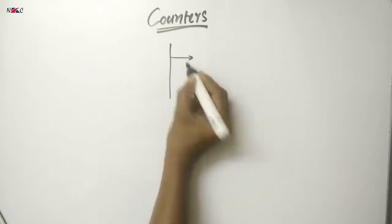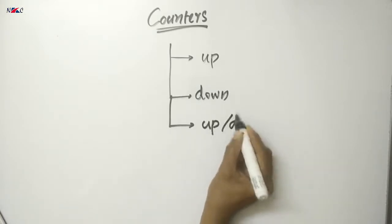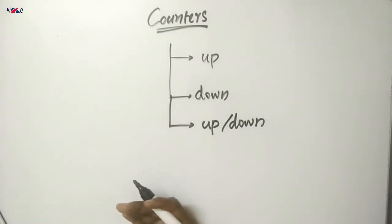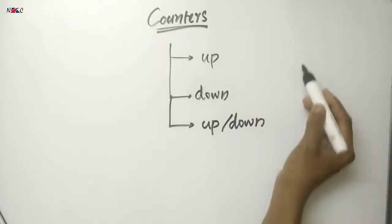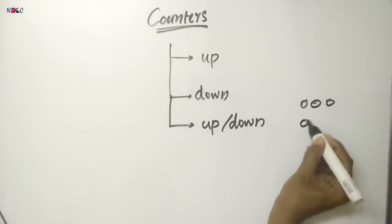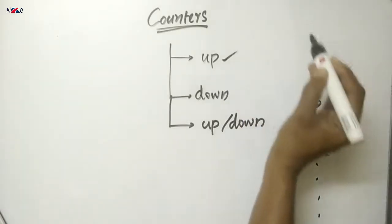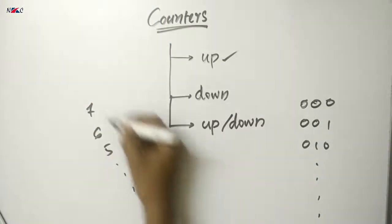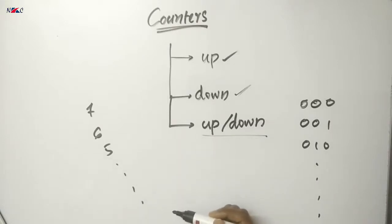Both synchronous and asynchronous counters can also be classified into up-counter, down-counter, or up-down-counter. An up-counter means the counting sequence will be in ascending order, such as 000, 001, 010, and so on. If the counter provides a descending sequence, such as 7, 6, 5, it will be a down-counter. An up-down-counter provides both up-counting and down-counting by using a mode control.